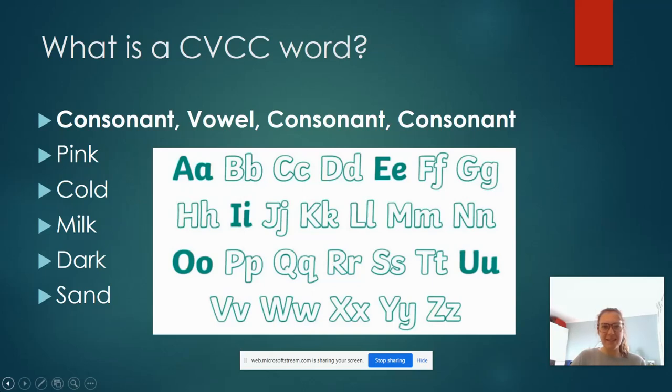Now what is a CVCC word? Because that just sounds like a load of rubbish. But it's basically a consonant, vowel, consonant, consonant word. Now on the screen I've got all of the vowels, so that's A, E, I, O, U, highlighted. They are all in bold in the blue and the other letters are all consonants.